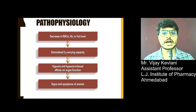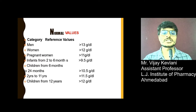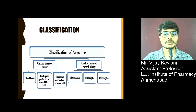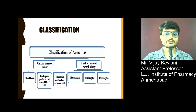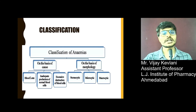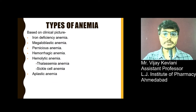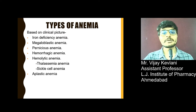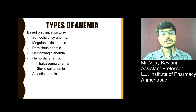The signs and symptoms of anemia are then observed. Normal values of hemoglobin across different ages have already been discussed. Classification of anemia: anemia can be classified based on cause and based on morphology of RBC. Based on cause, it can be due to blood loss, inadequate production of normal blood cells, or excessive destruction of blood cells. Based on morphology, it can be classified into normocytic, macrocytic, and microcytic. Types of anemia based on clinical picture include iron deficiency, megaloblastic, pernicious anemia, hemorrhagic anemia, hemolytic anemia, thalassemia, sickle cell anemia, and aplastic anemia.